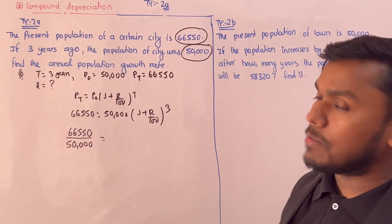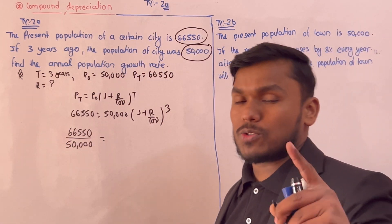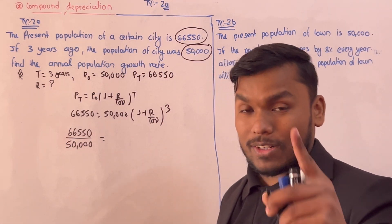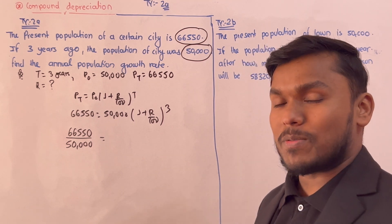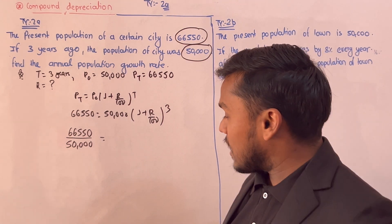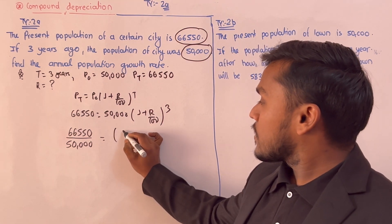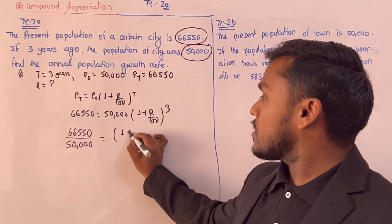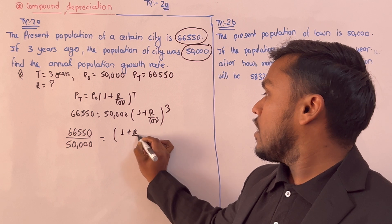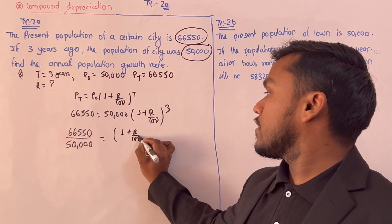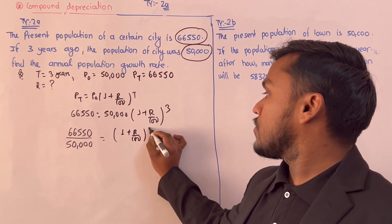Calculate: 1 plus r upon 100, to the power 3.